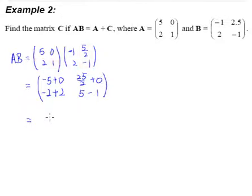The final answer for AB is: negative 5, 12.5, 0, and 4. This is our AB.